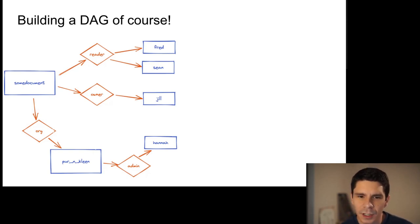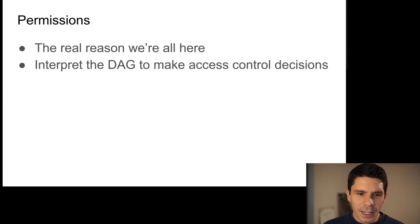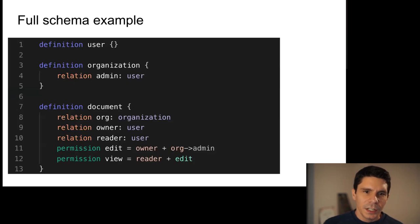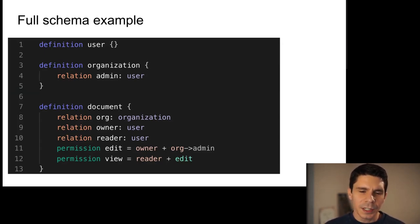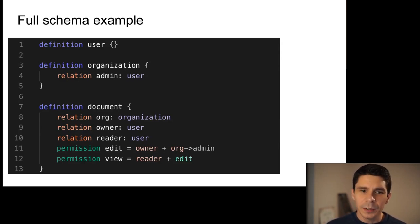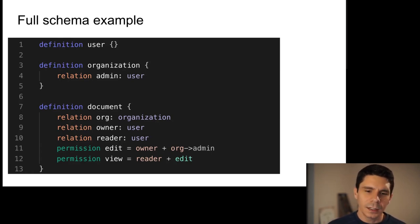Finally, permissions interpret the graph to make access control decisions. I've added two permissions to the schema: edit and view. The edit permission says anyone who is an owner of a document, or is an administrator of the document's organization, should have edit. The view permission is computed from anyone who is a reader, plus anyone who already has the edit permission — so edit permissions are inherited downstream when computing view.